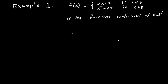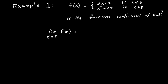Let's take a look at our first example. We have this piecewise function given here, and the question is asking: is the function continuous at x equals three? In order to determine this, we need to apply our definition for continuity, which says: is the limit as x approaches three of the function equal to the function value at three?